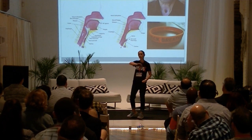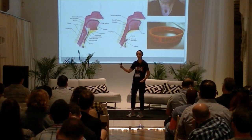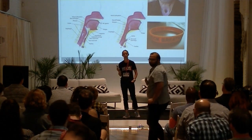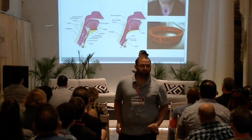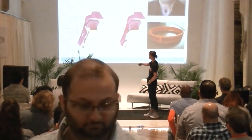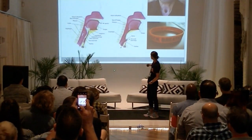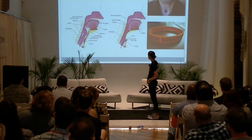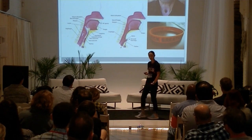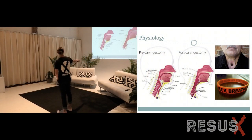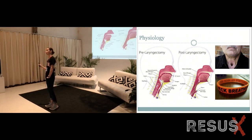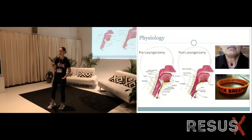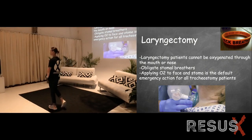There is one scenario where we need to change the last step of the algorithm: the laryngectomy patient. In a normal patient, the mouth ends in two holes — the esophagus or the trachea. Once a patient has had a laryngectomy, the larynx has been removed and the distal trachea has been permanently surgically pulled through to the skin surface to form a stoma. So the mouth ends only in the esophagus. No matter how good your airway skills are, you cannot intubate through the mouth in a laryngectomy patient — you will be ventilating the stomach 100% of the time. This is why the laryngectomy patient is an obligate neck breather — an obligate stoma breather.